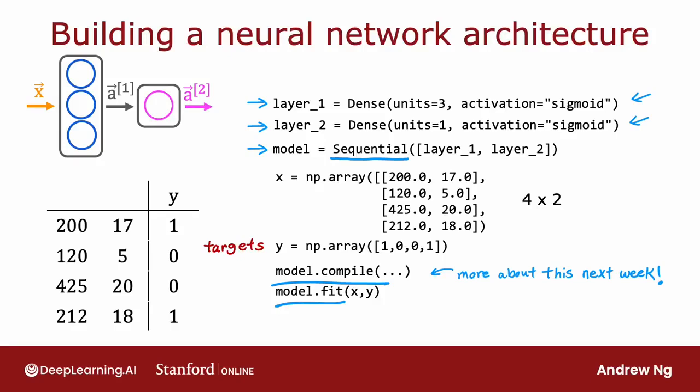But we'll learn the details of how to do this next week. And then finally, how do you do inference on this neural network? How do you do forward prop? If you have a new example, say x_new, which is np.array with these two features, then to carry out forward prop, instead of having to do it one layer at a time yourself, you just have to call model.predict on x_new, and this will output the corresponding value of a2 for you, given this input value of x.